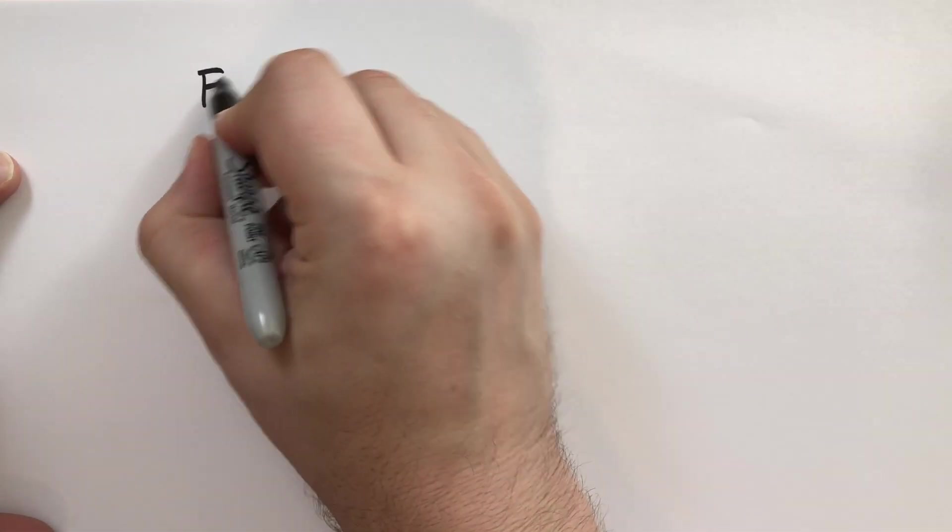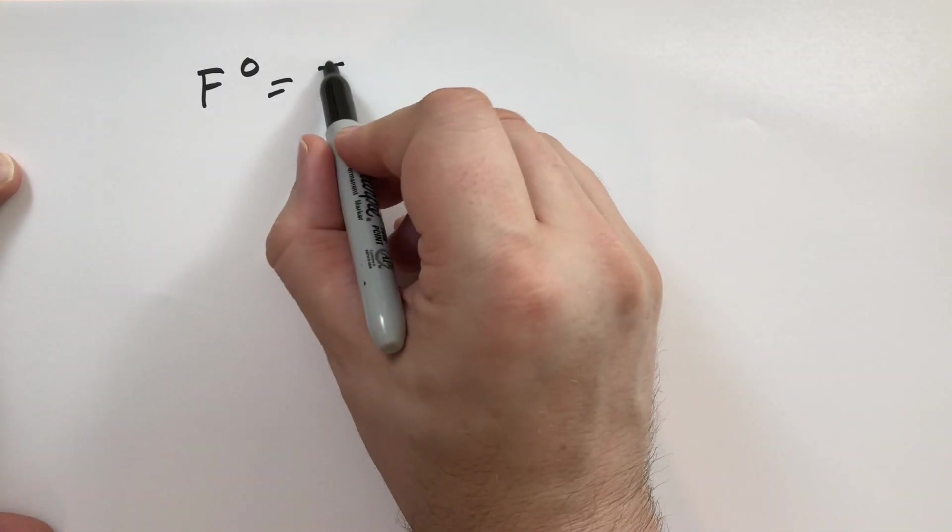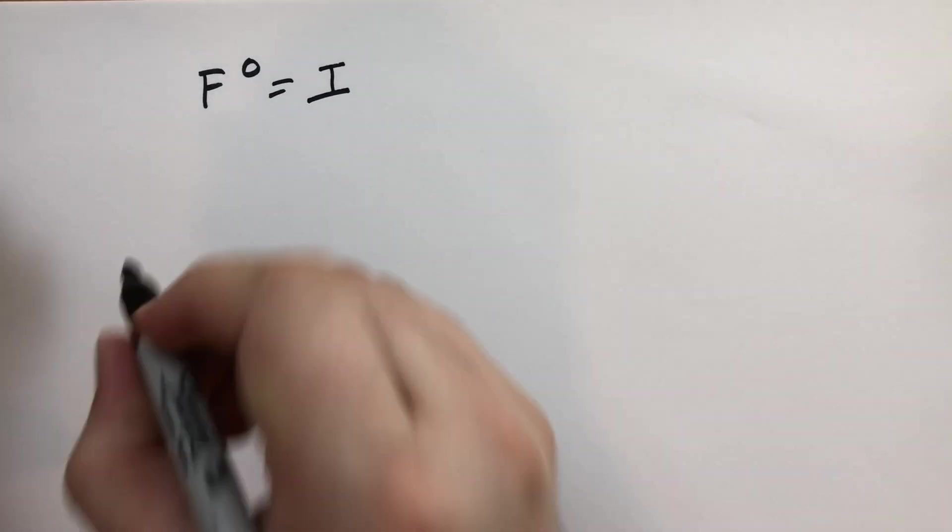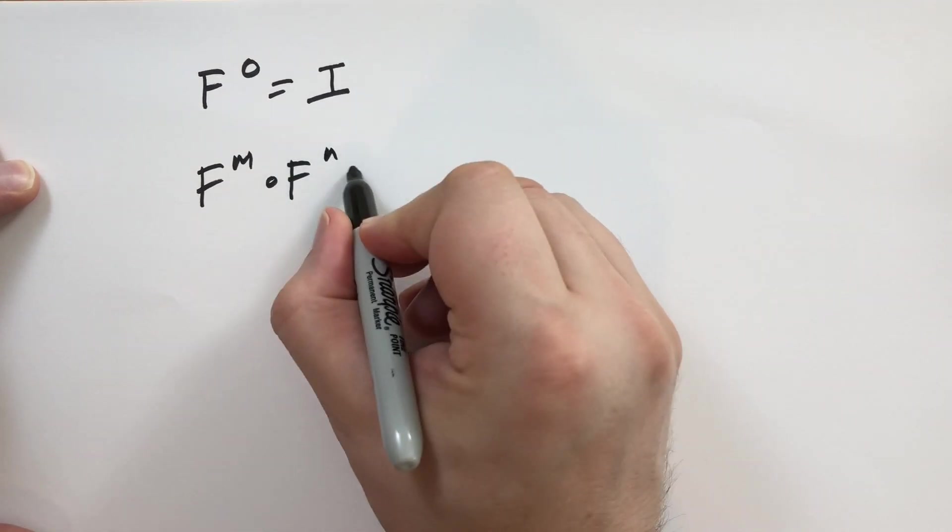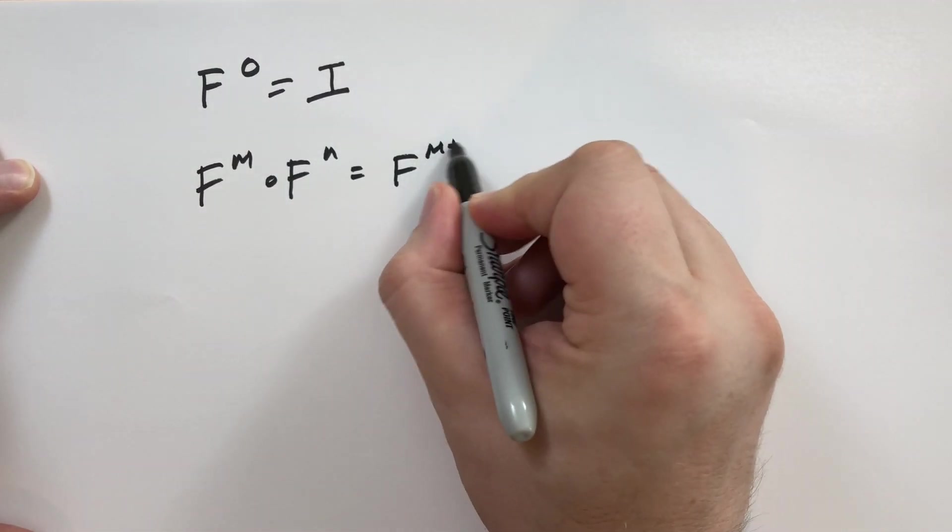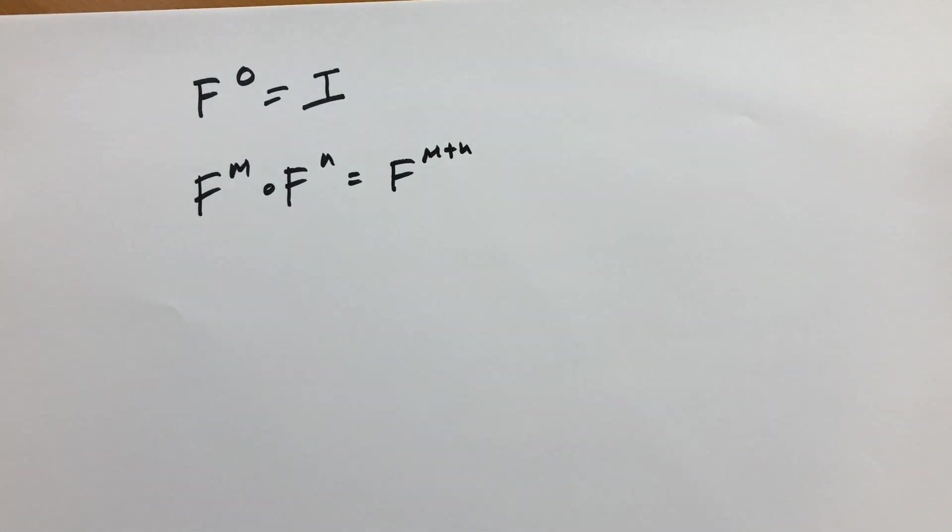We're going to define for an isometry, if we take F to the zero, any isometry F to the zero, we're just going to define that as the identity. It makes sense, especially in light of what we learned here. And we're going to have this additional rule that F to the M composed with F to the N, that's the same as applying F to the M plus N times. And this should be relatively obvious why this is so.